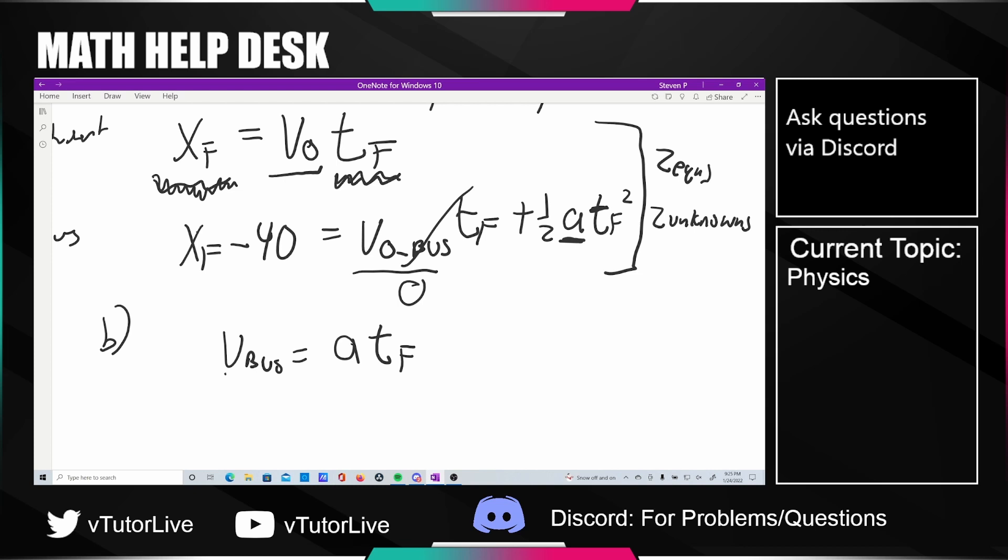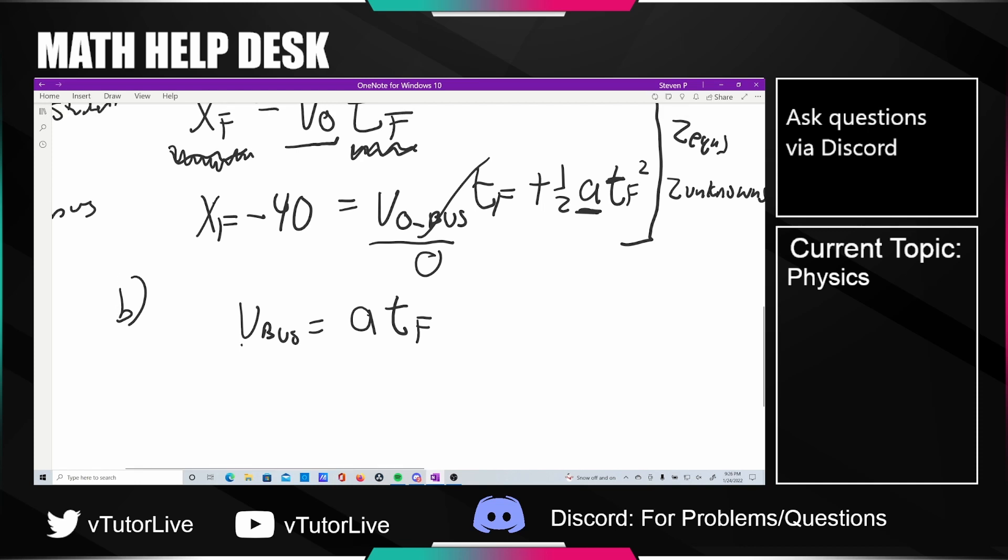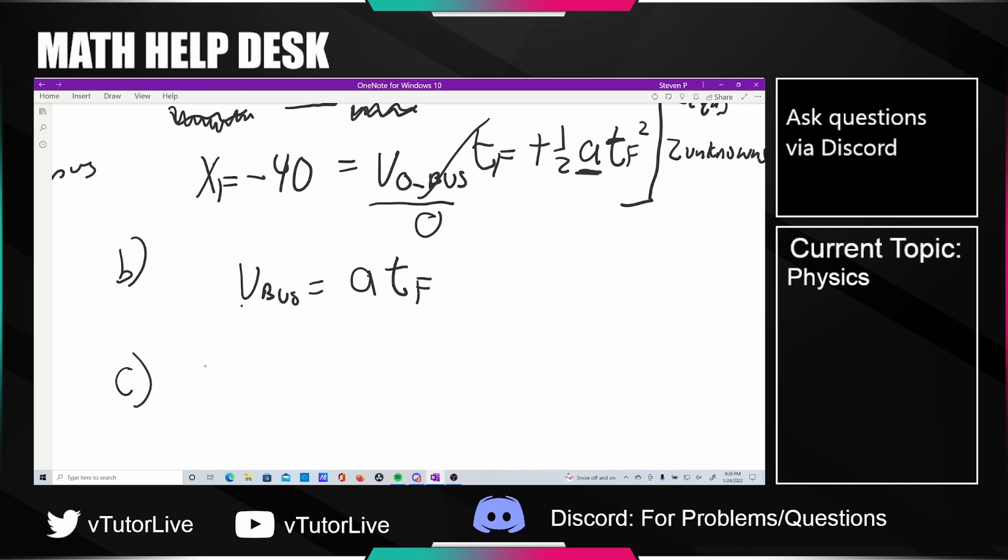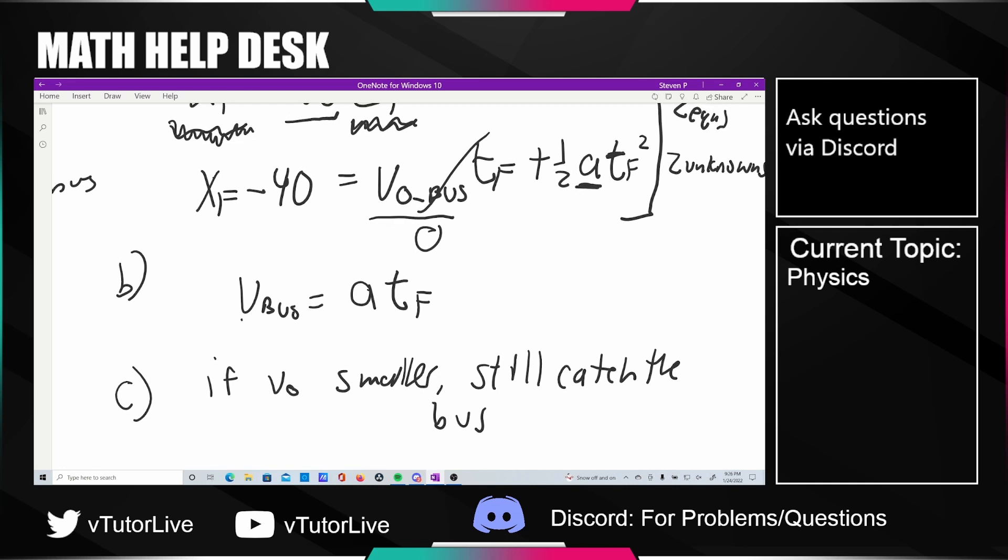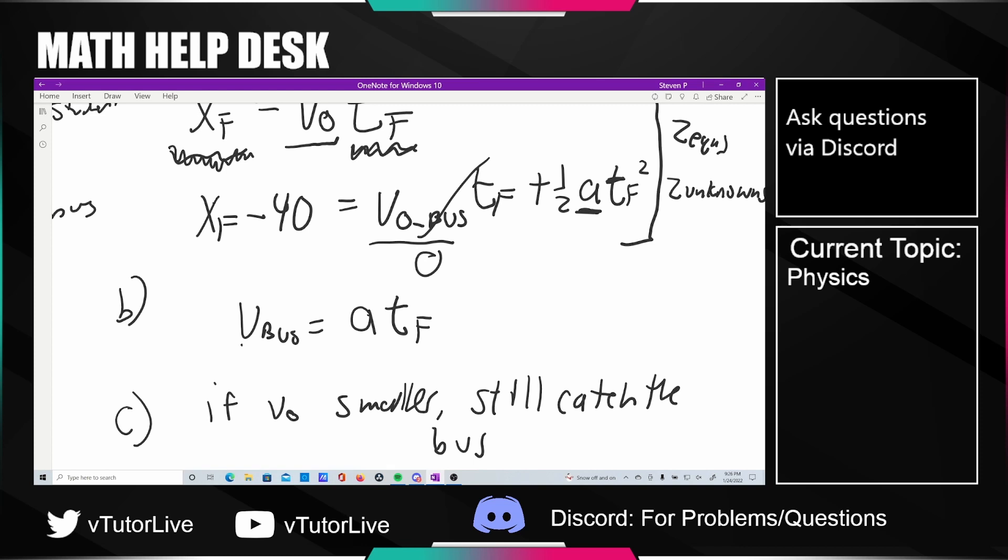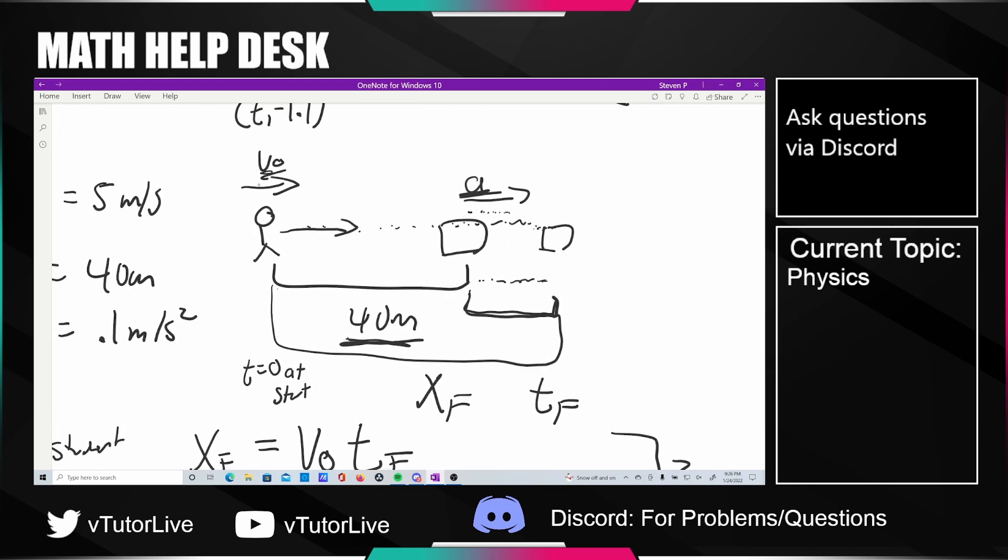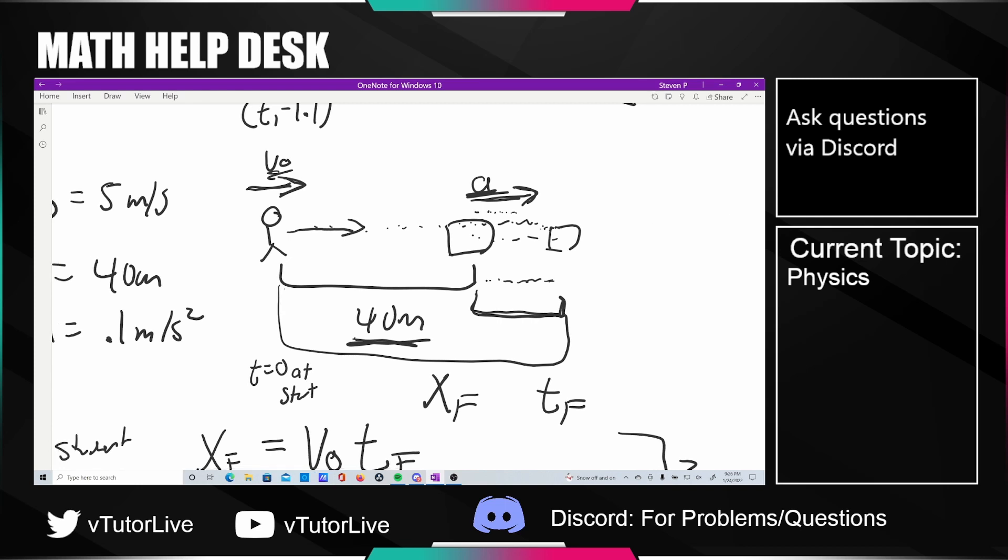The last part is asking us if the student's top speed is cut in half or something like that. If V₀ is smaller, maybe half or a third, can she still catch the bus? This is the part of the problem that gets really interesting. If the person is running slow enough, even though the bus has no initial velocity, if the acceleration is relatively fast enough, it's going to get away before the person reaches there.